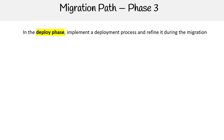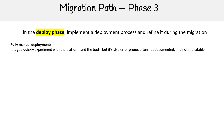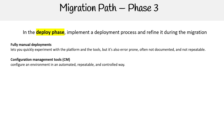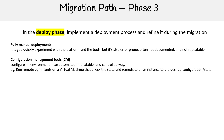For Phase three, the Deploy phase, implement a deployment process and refine it during the migration. You have fully manual deploys, which let you quickly experiment with the platform and tools but are error-prone and often not documented or repeatable. Configuration management (CM) tools configure an environment in an automated, repeatable, controlled way — they run remote commands on VMs that check the state and remediate an instance to the desired configuration state.